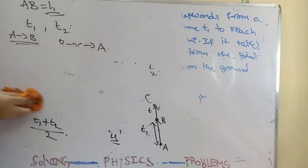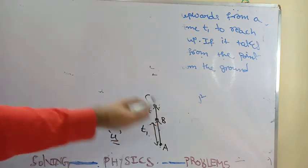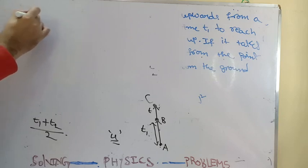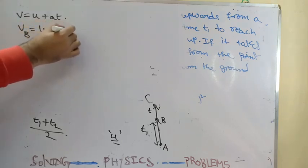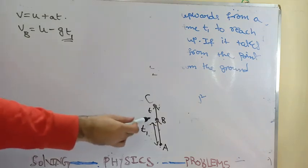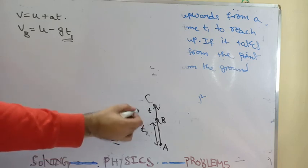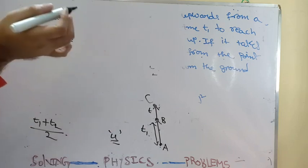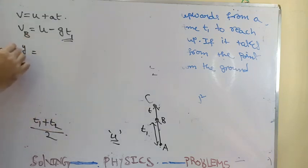Remember: (t1 + t2) / 2 is the time to reach the highest point. Now, what is the velocity at point B? Using v = u + at: the velocity at B is u minus g·t1, since gravity acts against the motion and it took time t1 to reach B. From B to C, the particle covers a distance — let's call it y — in time t.